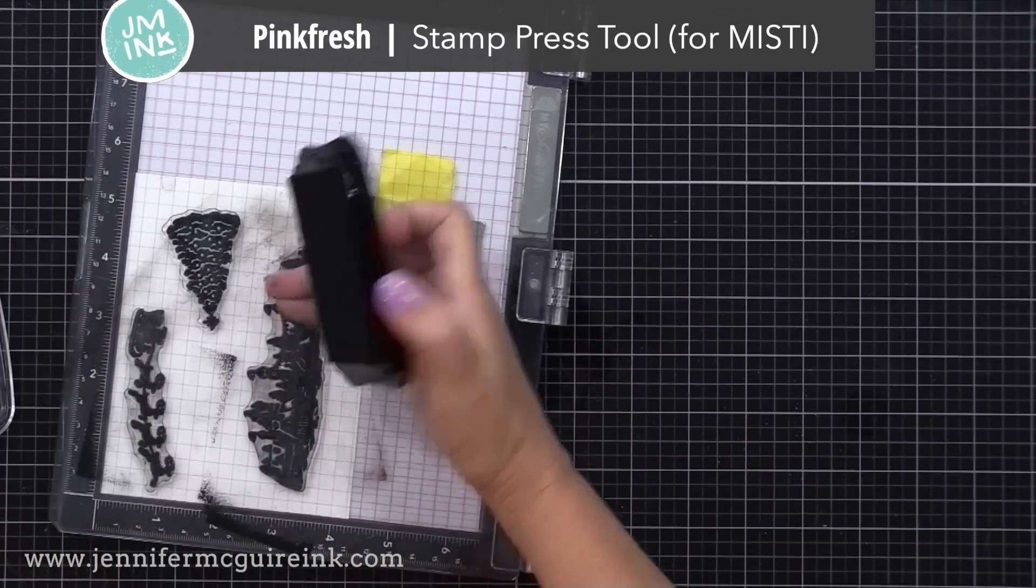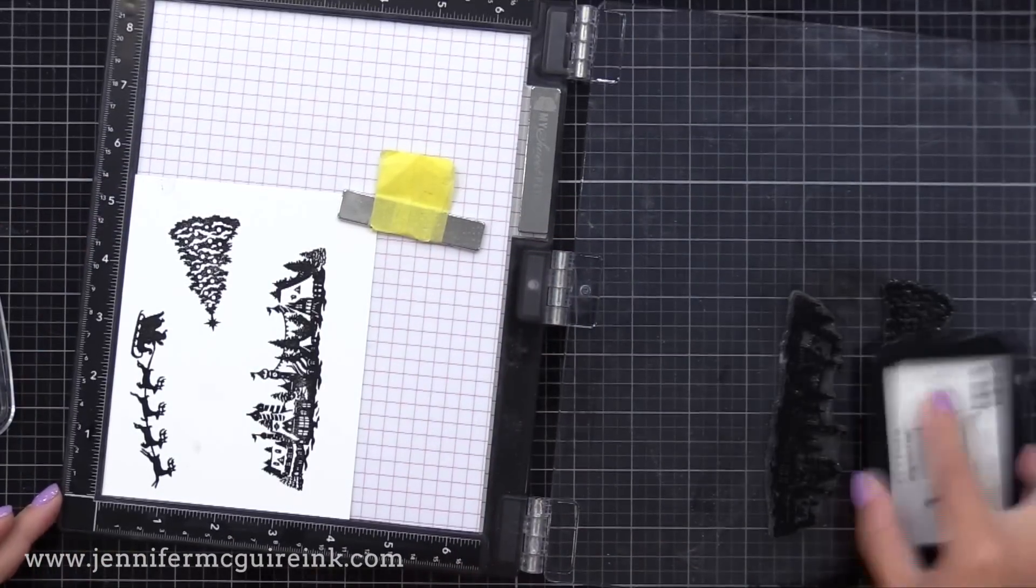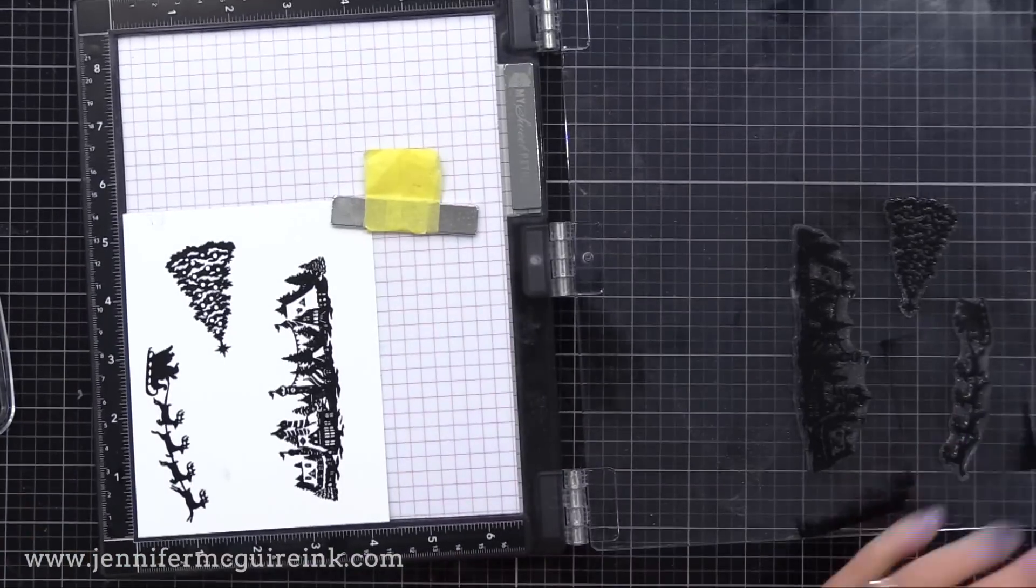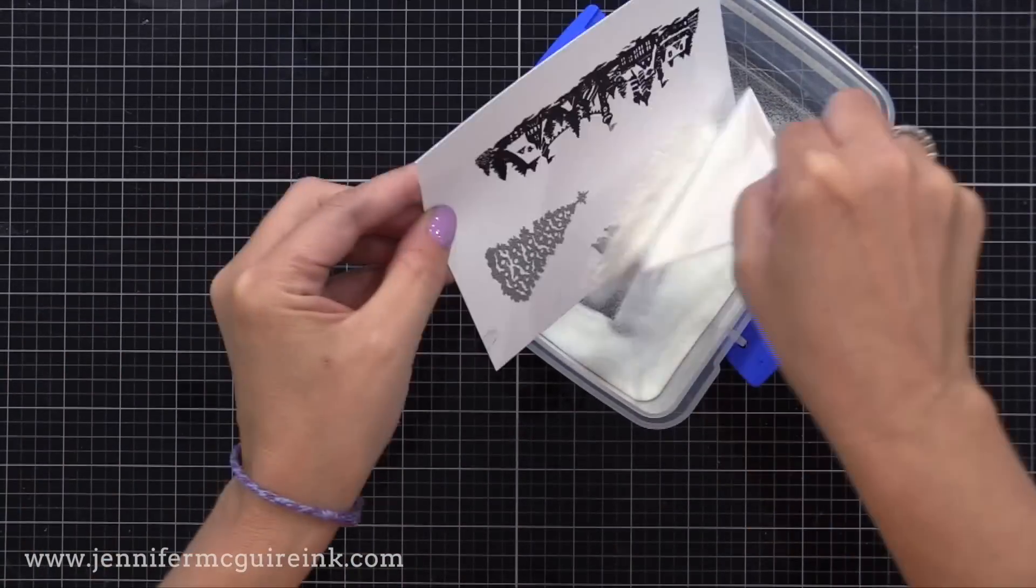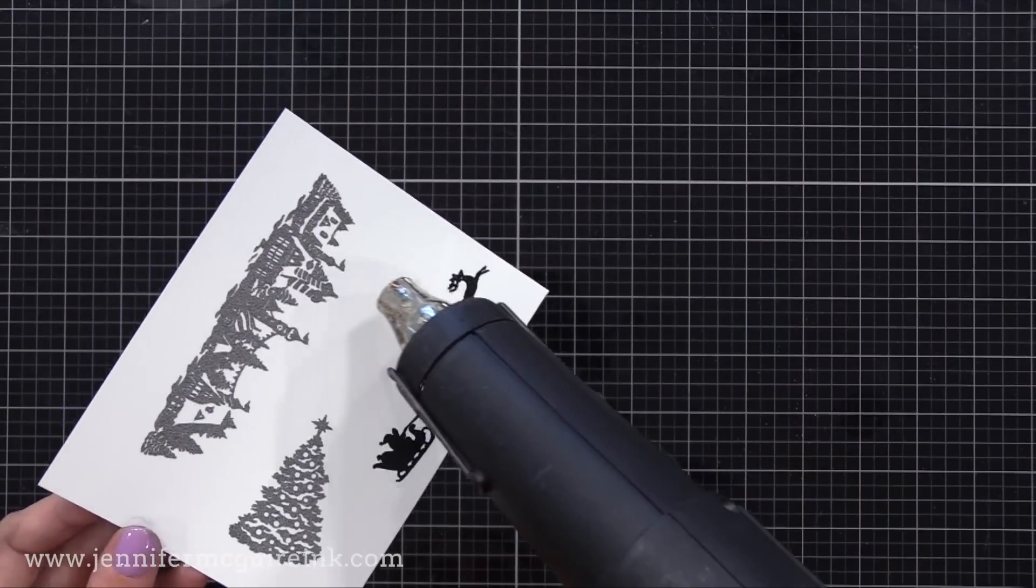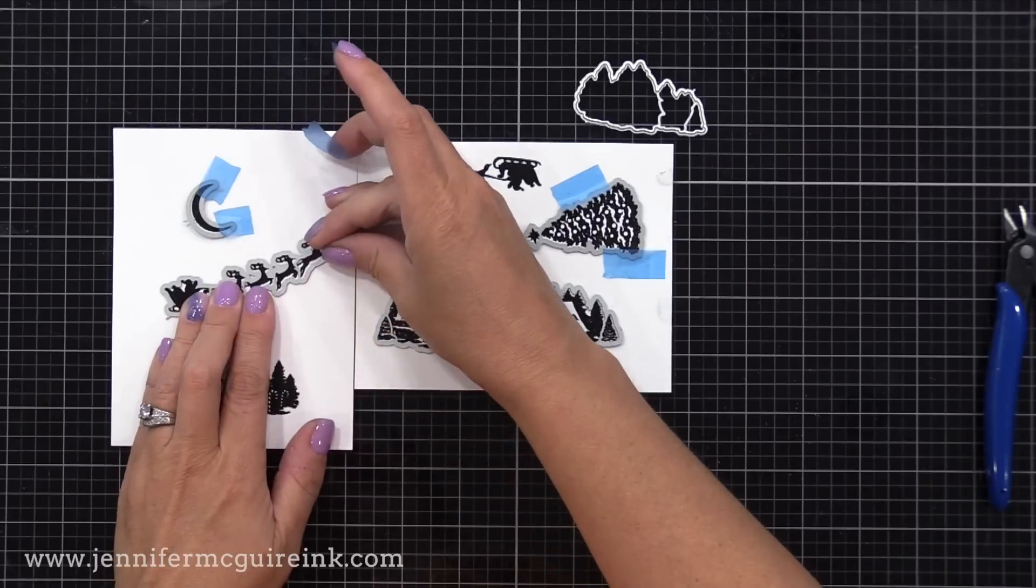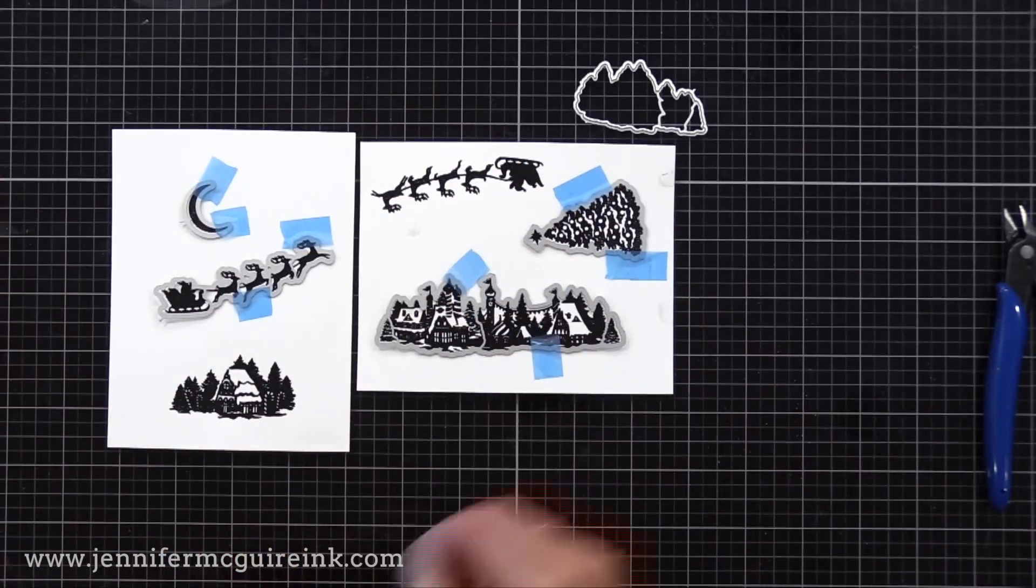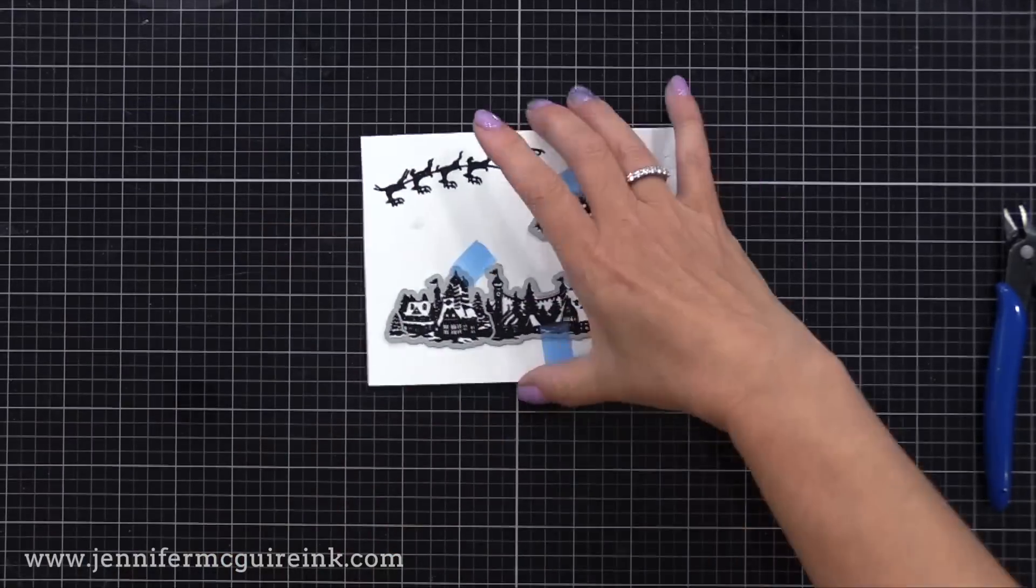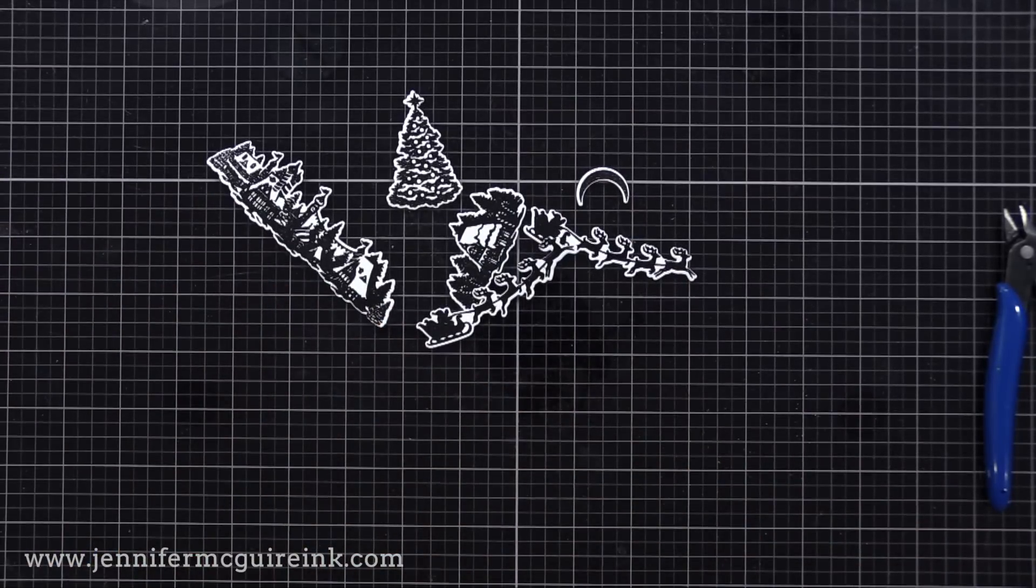If you do not have a black pigment ink, another thing you could do is stamp the image with a regular black dye ink, then stamp right on top of it with VersaMark ink, which is a little sticky, and then add the clear embossing powder. Now I'm stamping a few others here. Notice I have a little pressure tool that I press over my stamping tool. All right, so now we have all of our images cut out and ready to go for our cards.